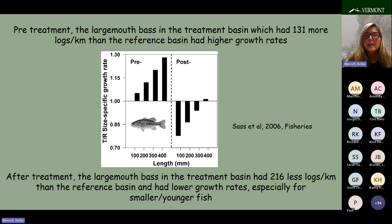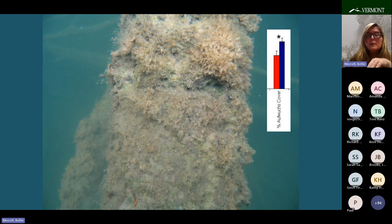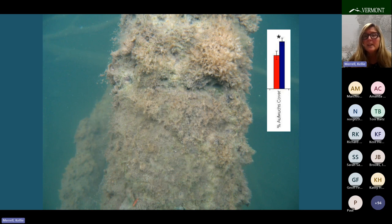Younger, smaller bass saw a real decline in their growth rates. The removal of woody structure also removes the substrate that a whole community of organisms lives on — microscopic animals, plants, and bacteria that are an important food source for fish and macroinvertebrates. This community is called Aufwuchs — it's a German word, and also a really good word to yell out when you're slipping on it in the littoral zone. In our study, we found statistically significantly less Aufwuchs off of developed sites versus the undeveloped sites in Vermont lakes.